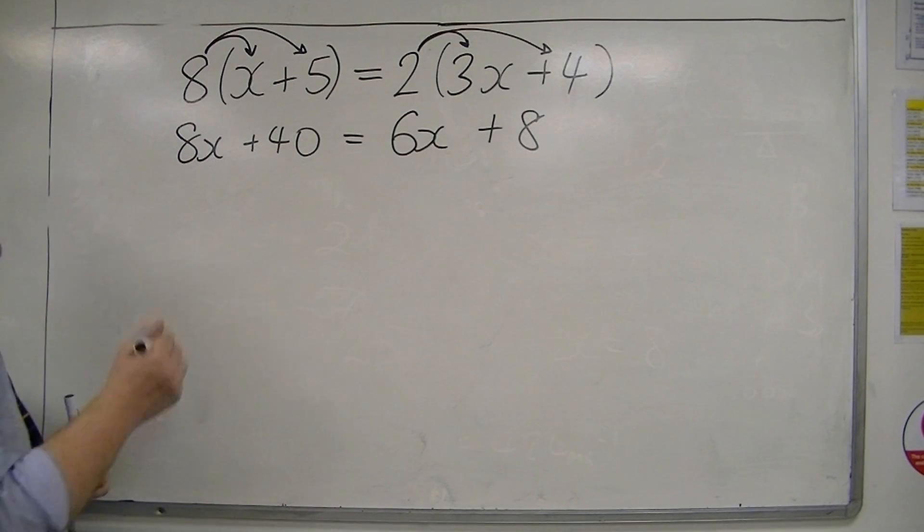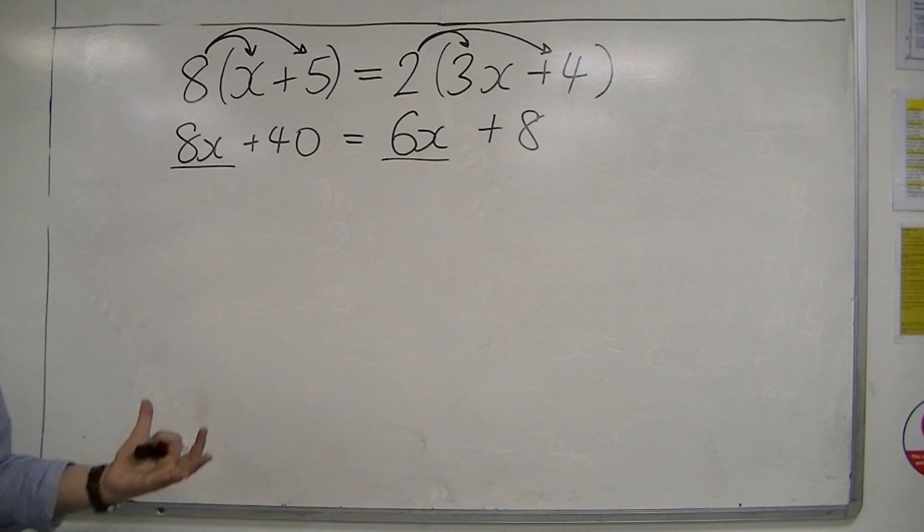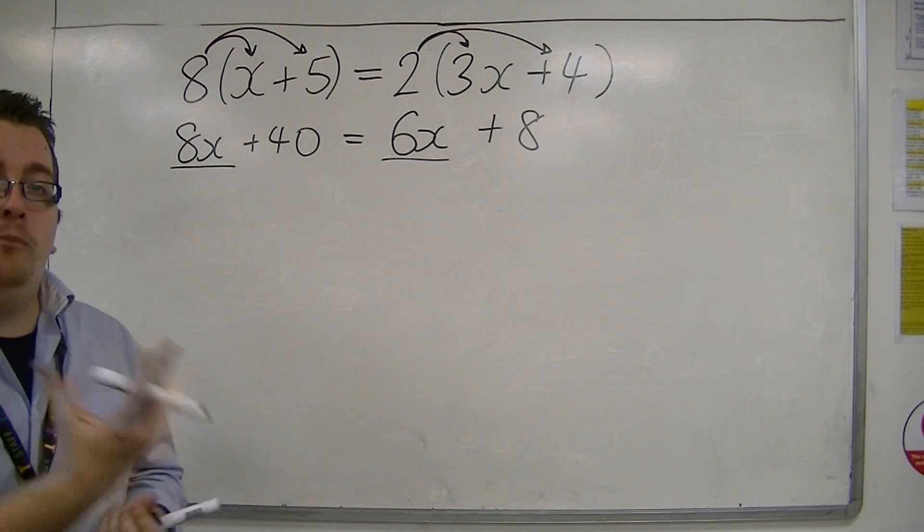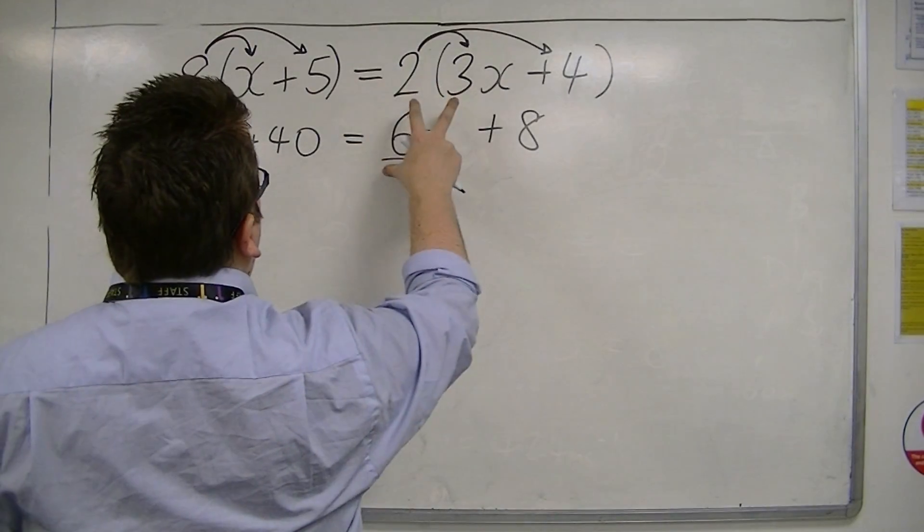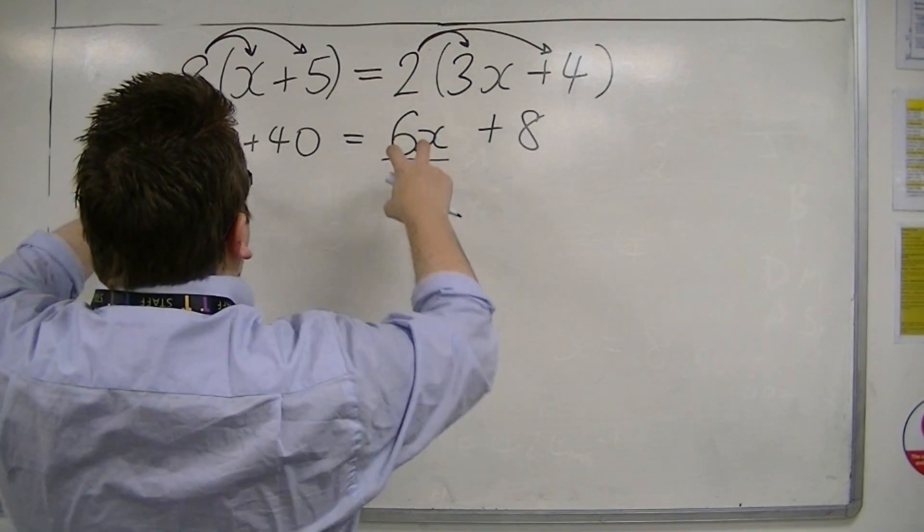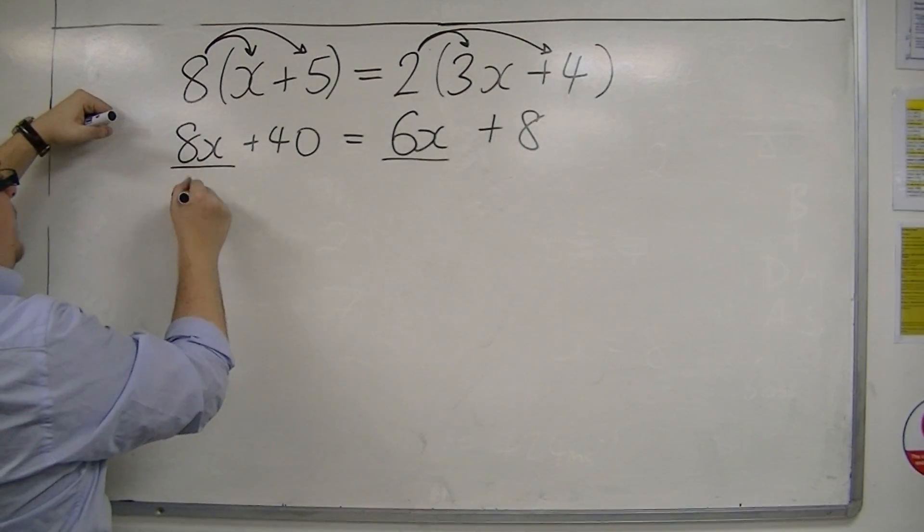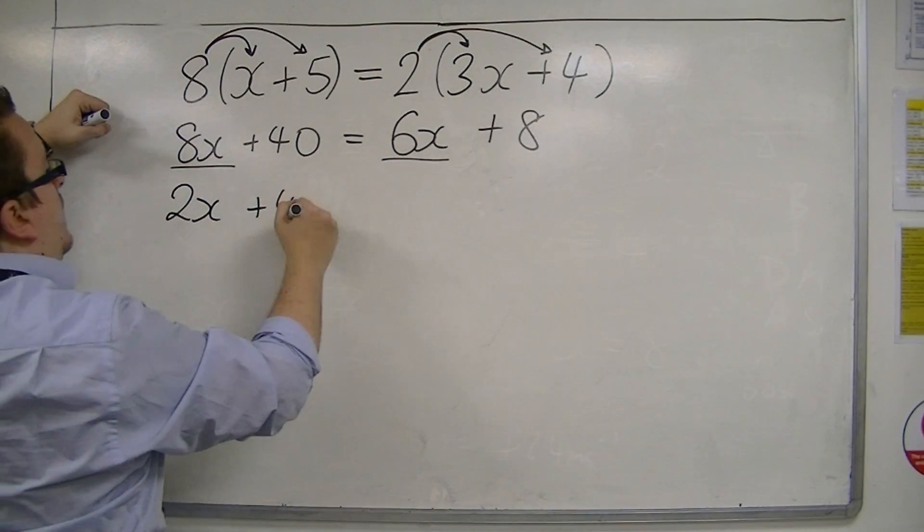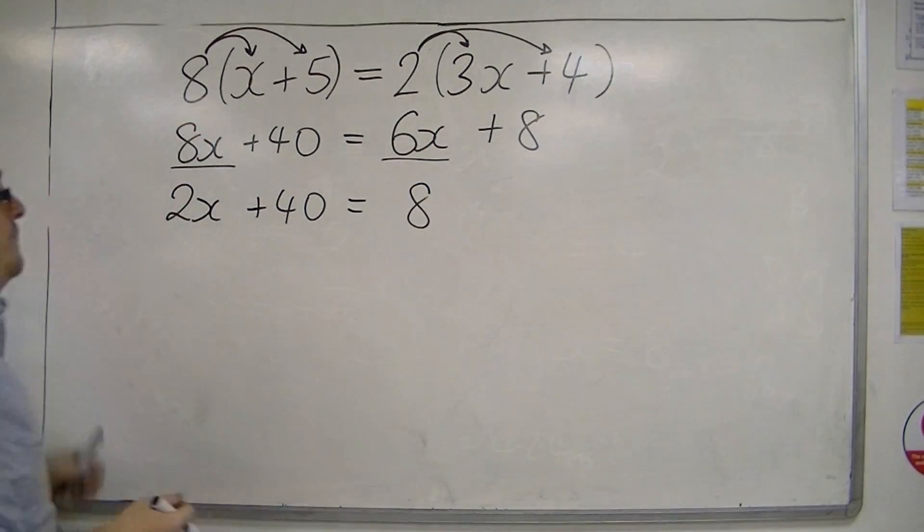Now, because we've got unknowns on both sides, let's underline them, and let's think, which is the smaller? Because I want to subtract the smaller from both sides. The smallest of these two is the 6x. So if I take 6x from both sides, I'm going to get left with 2x on this side. No x's left on that side, just that 8. And I've reduced this to a two-step equation.